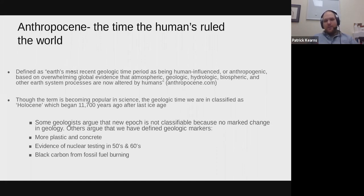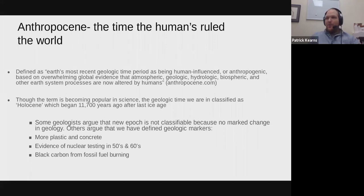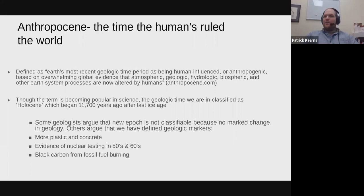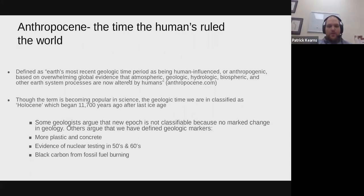The Anthropocene is defined as the Earth's most recent geological time period as being human-influenced or anthropogenic, based on overwhelming global evidence that atmospheric, geological, hydrologic, biospheric, and other Earth system processes are now being altered by humans. Very few things impact all these characteristics the way we do — it's truly remarkable.